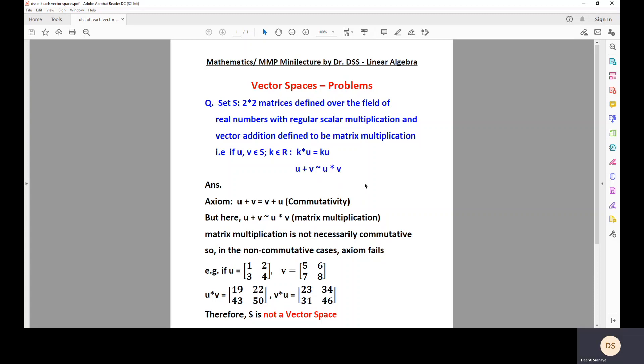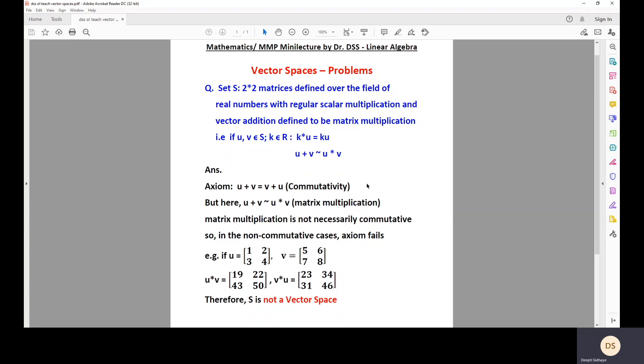Now, there are several axioms. We know that we try to verify the 10 axioms to show whether it is really a vector space. Now, here we will concentrate only on one of the axioms which fails.